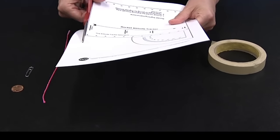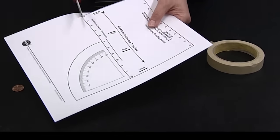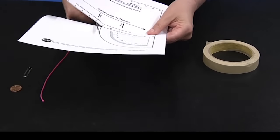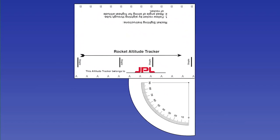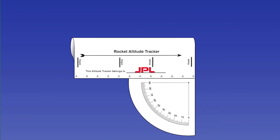Start by cutting the template out, following the solid lines on the outside of the altitude tracker. Take the line of B's and the line of A's and connect them. You're going to roll the B past the A, and then it says to staple. My stapler does not fit inside of there, so I am going to simply tape it. The idea is to make a sighting tube.